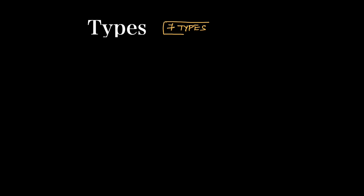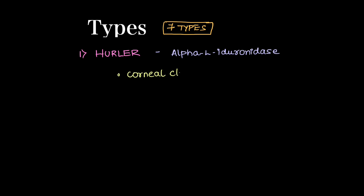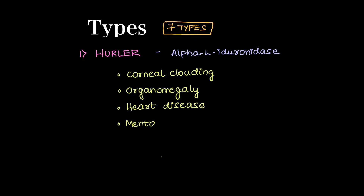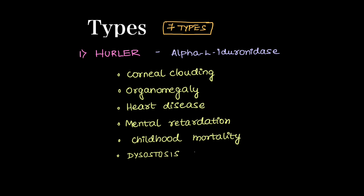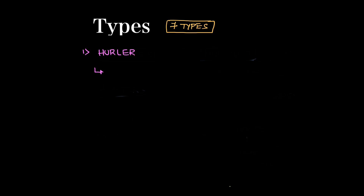We will discuss the types and brief clinical features of each type. There are totally 7 types. The first type is Hurler's disease, where there is deficiency of alpha-L-iduronidase, presenting with corneal clouding, organomegaly, heart disease, mental retardation, and childhood mortality. There is dysostosis multiplex in the skeletal system. Hurler's further has subtypes: S type (Scheie's disease), H type (Hurler's disease), and SH type (mixed).